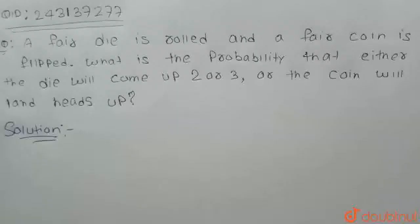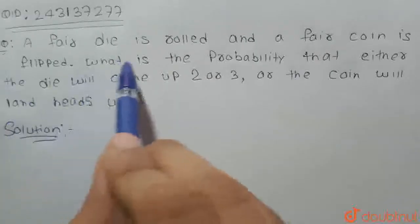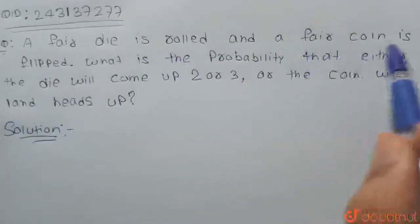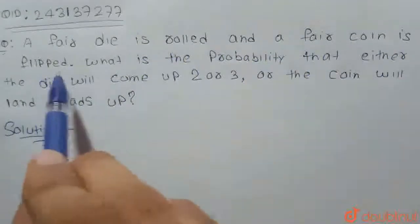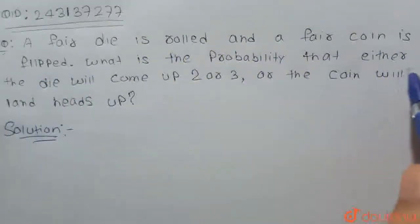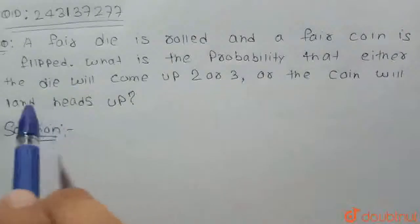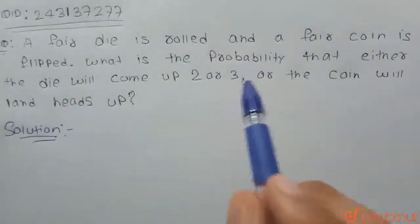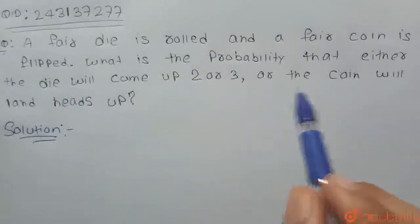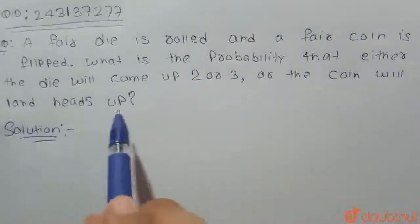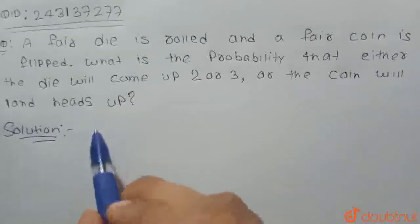Hello students, let's see the question. The question is: a fair die is rolled and a fair coin is flipped. So what is the probability that either the die will come up 2 or 3, or the coin will land heads up?